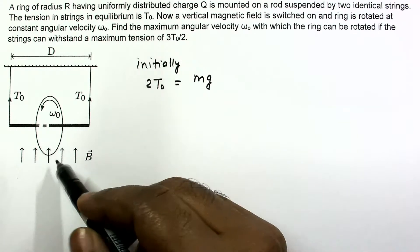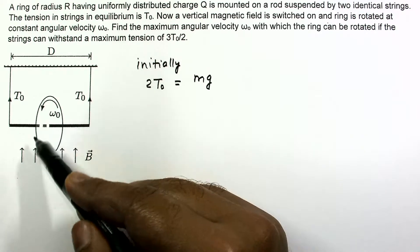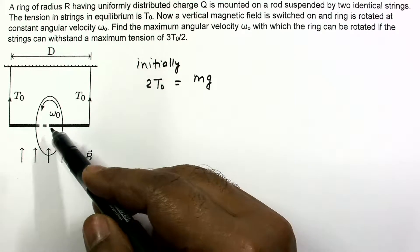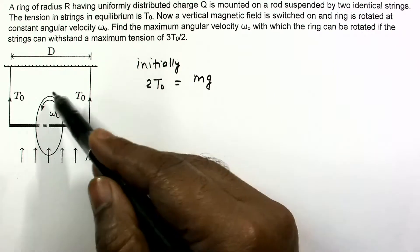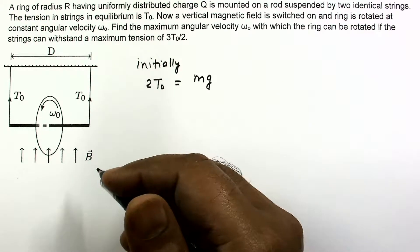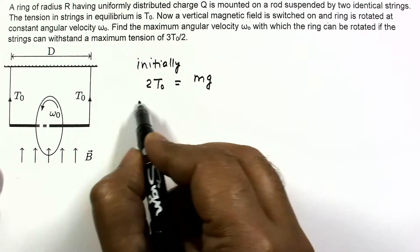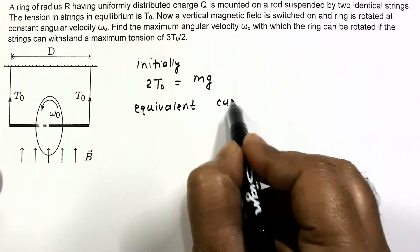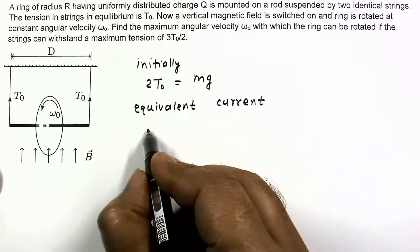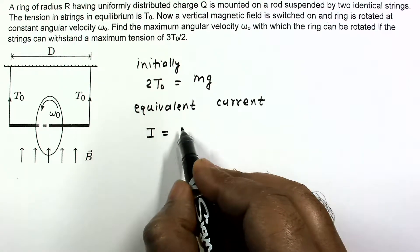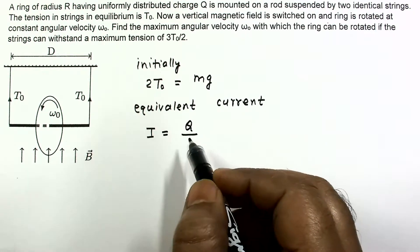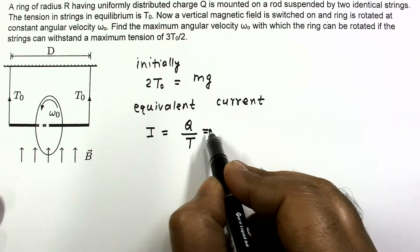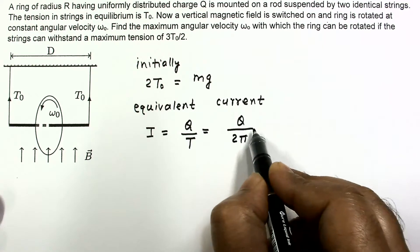When we switch on the magnetic field and rotate the ring at some angular velocity ω₀, a moving charge is equivalent to a current. This rotating charge can be taken as equivalent to a current. The equivalent current I equals total charge Q divided by time period T, and T equals 2π divided by ω₀. So I = Qω₀/2π.